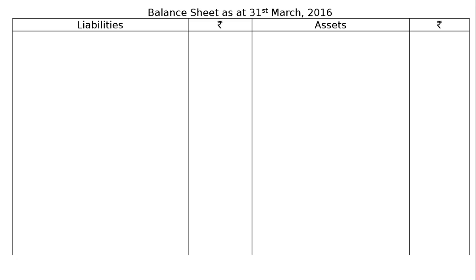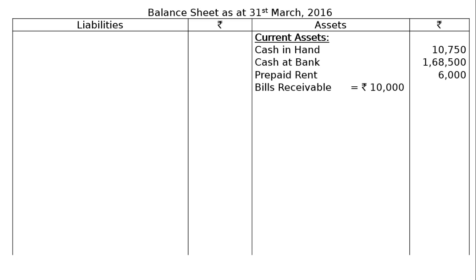On the liabilities and assets side: current assets — cash in hand rupees 10,750, cash at bank rupees 1,68,500, prepaid rent rupees 6,000. Bills receivable rupees 10,000 less rupees 2,000 — per adjustment part A, a dishonoured bills receivable of rupees 2,000 returned by the bank with whom it had been discounted was credited to the bank account and debited to the bills receivable account. Hence it will be deducted from bills receivable and added to sundry debtors.